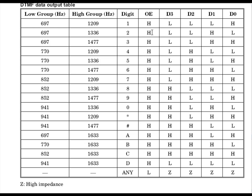And this is the output enable. We will learn about that later. These are the outputs D0, D1, D2, D3. Now when digit 1 is pressed, it gives this kind of tones, and those tones give a binary output — for digit 1 it is 0, 0, 0, 1.